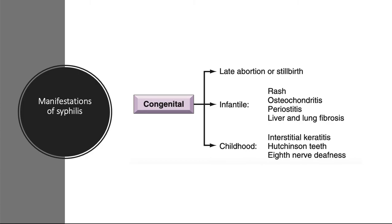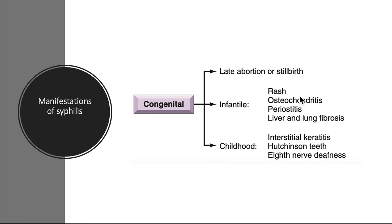The incidence of congenital syphilis is expected to rise because infection rates in women have increased in recent years. Untreated maternal syphilis can lead to miscarriage, stillbirth, or congenital infection. Many infants with congenital syphilis will be asymptomatic at birth. Congenital syphilis is divided into early and late stages. In the first few weeks of life, the effects to the infant resemble secondary syphilis with a multi-organ infection. The infected skin and mucosa can present as a macular papular rash, vesiculobullous lesions, mucous patches, condylomata lata.